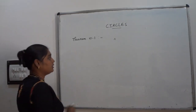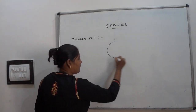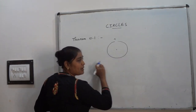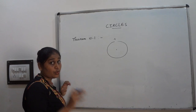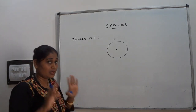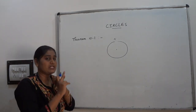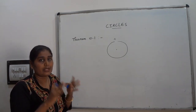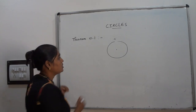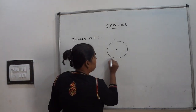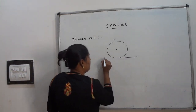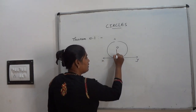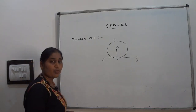So what are the things given here? First, draw a figure. The radius is perpendicular to the tangent through the point of contact. That means three things are given to you: one is the tangent, another is the radius, and another is the point of contact. So draw the figure accordingly. XY is the tangent, O is the center of the circle, and P is the point of contact.